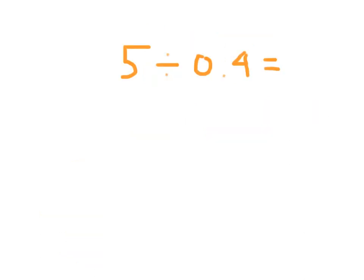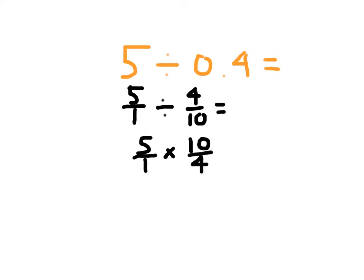We have 5 divided by 4 tenths, which can be written in fraction form as 5 over 1 divided by 4 over 10. We now rewrite this division problem as a multiplication problem: 5 over 1 times the reciprocal of 10 over 4. 5 times 10 is 50, and 1 times 4 is 4.